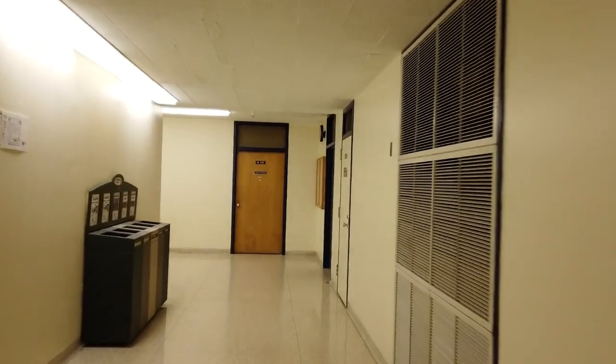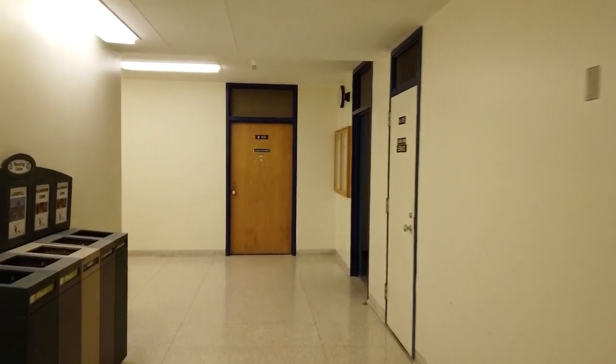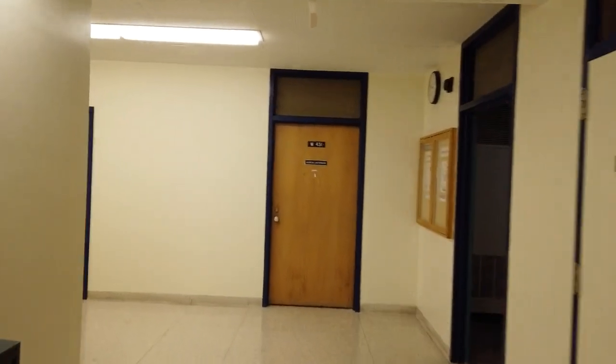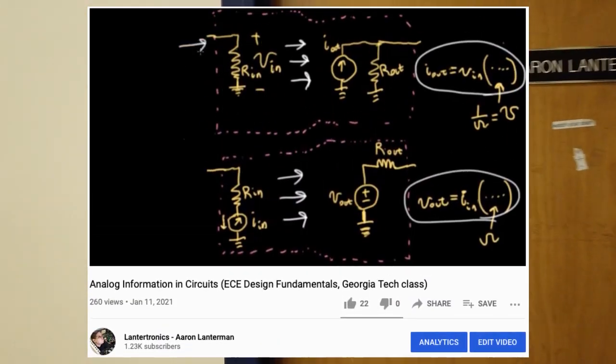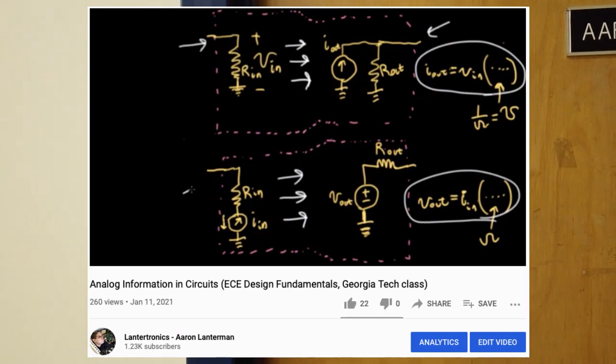In the last lecture in this series on the fundamentals of ECE design, we talked about how analog information can be represented as voltages or currents for inputs and outputs of various electrical systems.